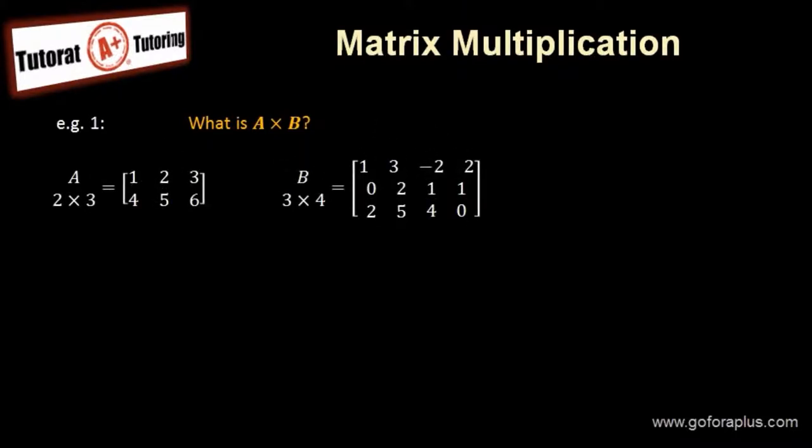So how do we do matrix multiplication? The first thing that we have to look at is the size of both matrices. We see that matrix A is 2 by 3 and matrix B is 3 by 4. So what we're really looking at when we do A times B,